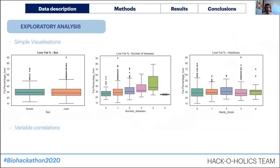First we did some simple visualizations to see which general directions we may proceed. We found that parameters like sex didn't seem to change the average or median percentage of fat in the liver — it was the same with the pancreas. However, the number of diseases seemed to be a bit better at predicting fat content, which makes sense: if the liver has four diseases, it's probably going to be a bit more fatty than average.